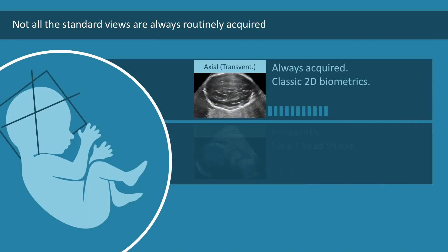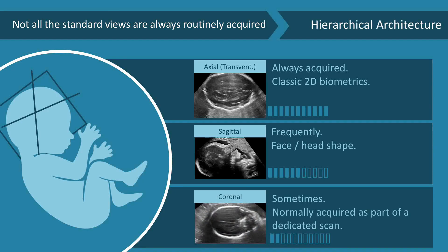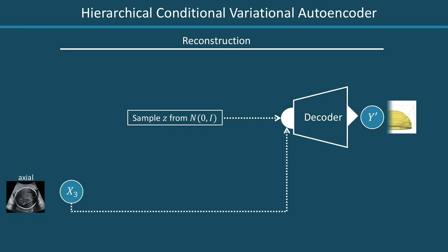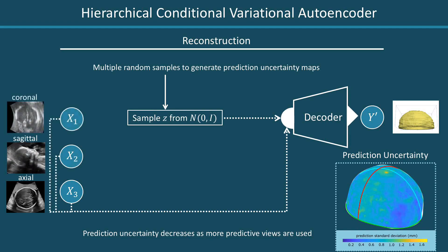Another important extension of this architecture is the ability to deal with different clinical scenarios. When we talk with our clinicians, we have to face reality: we do not always have access to all three standard planes — the axial, the sagittal, and the coronal. So we made the architecture more flexible by presenting a hierarchical conditional variational autoencoder that encodes into a 64-dimensional latent space the hierarchy defined by the availability of these views.